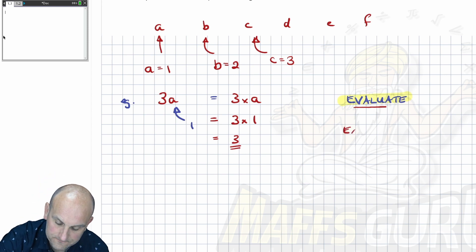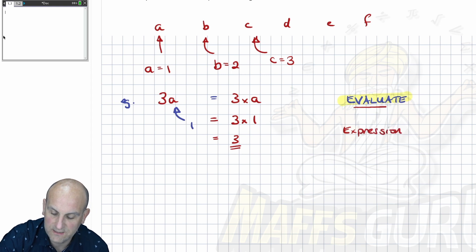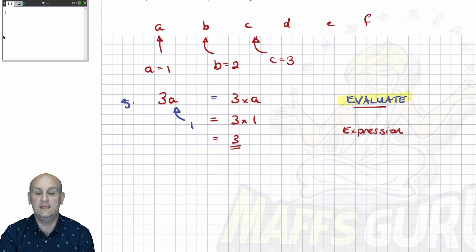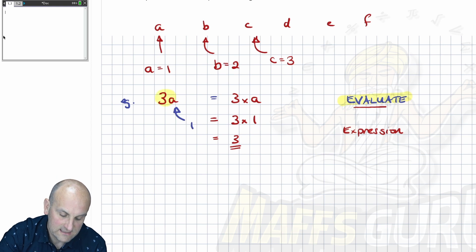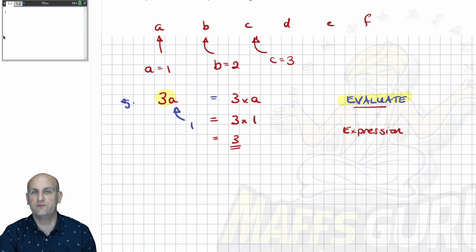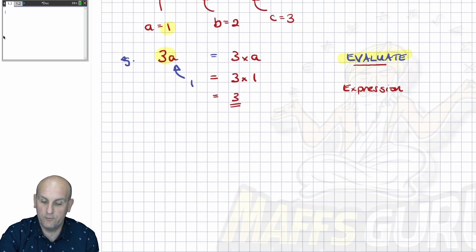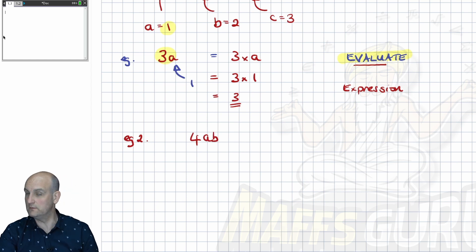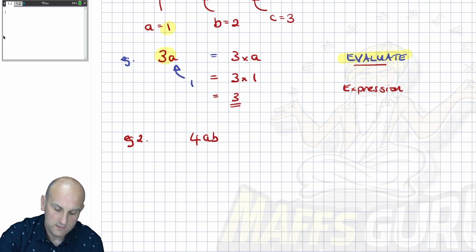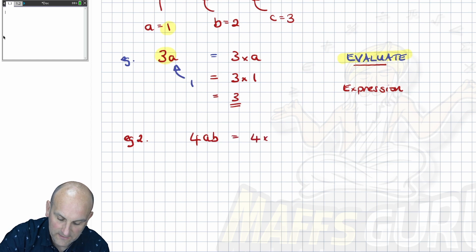Do you remember what expression was? An expression is something that doesn't have an equal sign in it. So that 3A does not have an equal sign — I can't solve it, so I'm evaluating the expression. That makes sense, doesn't it? Because 3A is like saying three lots of A, and if A was 1, then I would have three lots of one. Let's continue the example with our substitution idea.